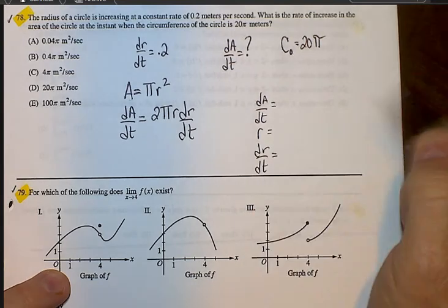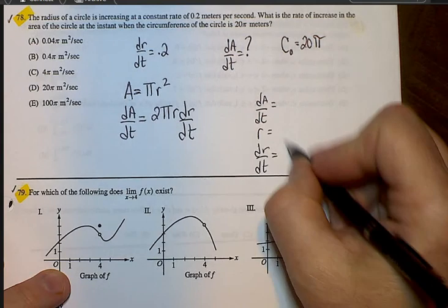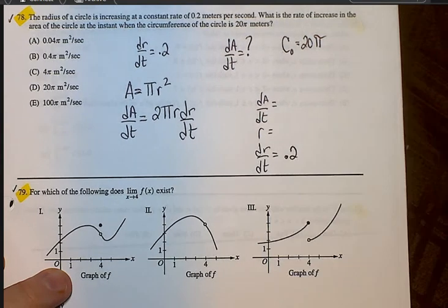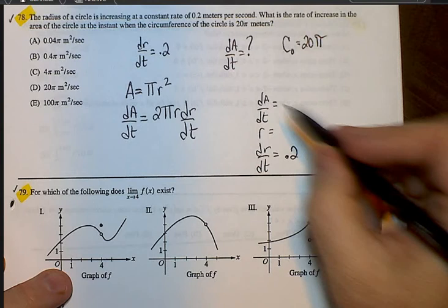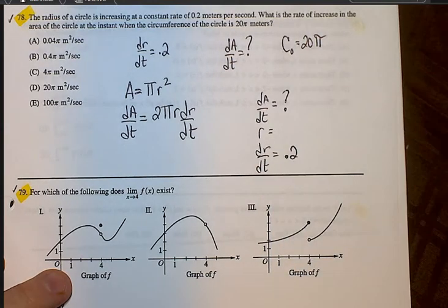We know what dr/dt is. The dr/dt, it says the radius is increasing, so that's a positive 0.2, so we know that. dA/dt is what we're looking for, and we have to just figure out what r is.